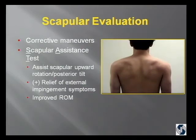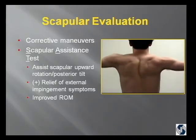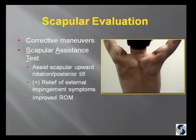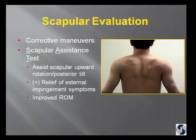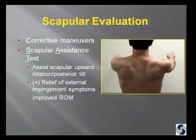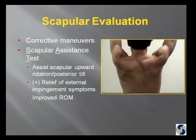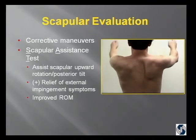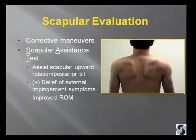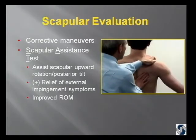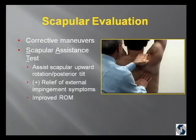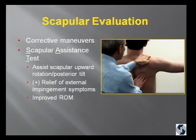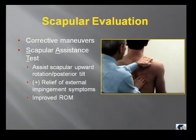Then I go to the corrective maneuvers. The scapular assistance test — if you have the patient bring their arms out to the side — he does have scapular dyskinesis. This is a long thoracic mononeuropathy. He cannot get his right arm all the way up due to pain. The scapular assistance test substitutes for the scapular stabilizers — you're giving it a little proprioceptive guidance. With that, you can eliminate or decrease the pain and increase the range of motion. So I know this is not a motion problem except for his inability to control his scapula.